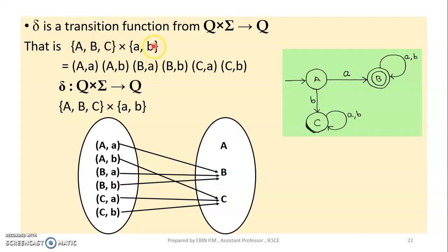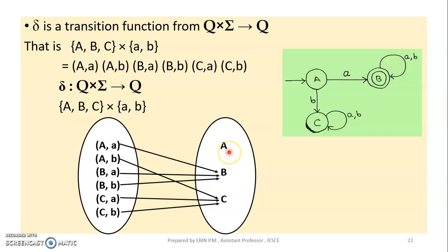So Q cross sigma — for example, {A, B, C} cross {a, b} — gives Q. So for each state and each input symbol, the DFA transition function returns a single state in Q.